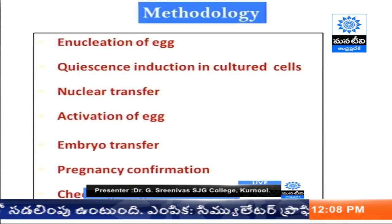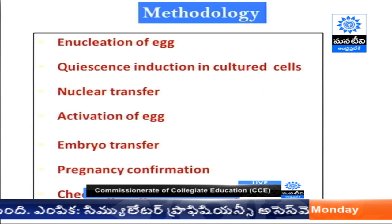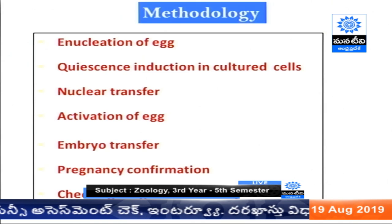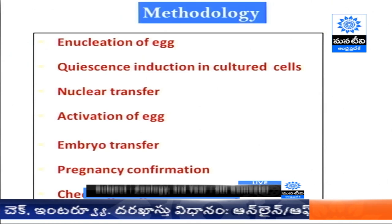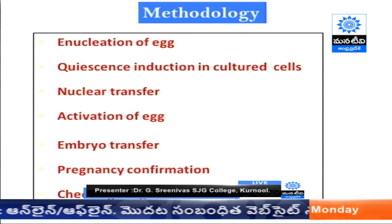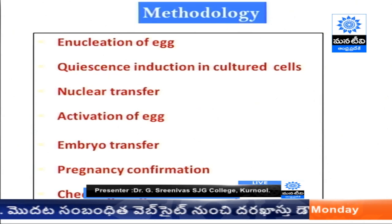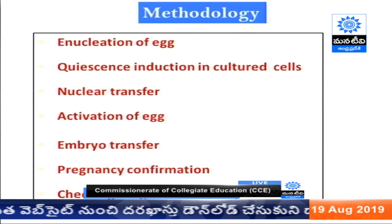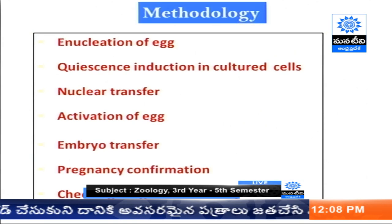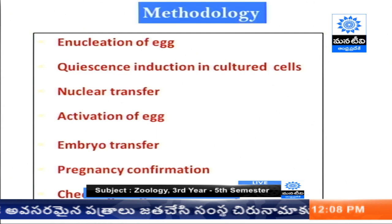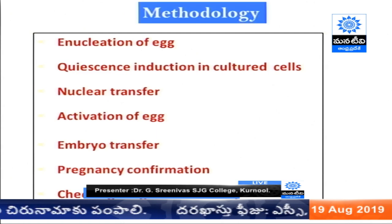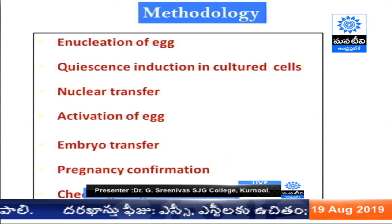The methodology involved in reproductive cloning includes enucleation of the egg — removing the nucleus — then introduction of particular cells, nuclear transfer, activation of the egg, embryo transfer to the mother, pregnancy confirmation, and checking for genetic identity. This is the general process seen in reproductive cloning.